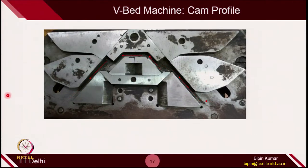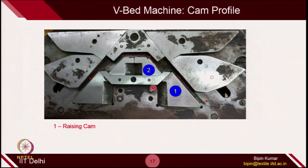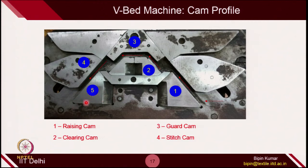If the cam jacket is moving from left to right instead, the needle path is reversed: the butt first hits the rising cam on that side, then the clearing cam, with the guard cam guarding the path. Then it strikes the adjustable stitch cam, and finally the upthrow cam. This is how the cam profile of a V-bed machine is decided. Since the V-bed has 2 beds, each bed has almost the same type of cam profile.